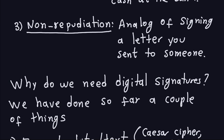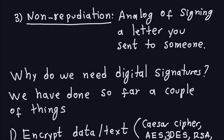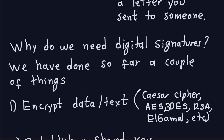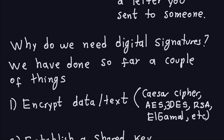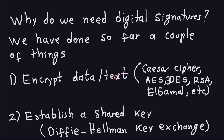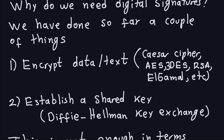Now let's talk about why we need digital signatures and go into more specifics. What we have done throughout the course so far is a couple of things: one is encrypting data or text — at the beginning of the class, we encrypted text using Caesar ciphers, permutation ciphers, and substitution ciphers. The more advanced ones are data encryption standards like AES, Triple DES, RSA, ElGamal, and others. We also talked about the Diffie-Hellman key exchange, which is used to share a key over an insecure channel so you can use it with a symmetric cipher like AES or Triple DES.